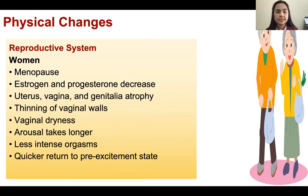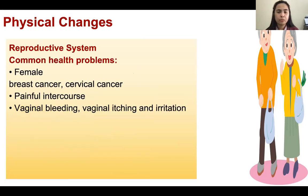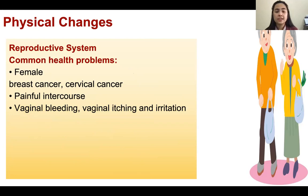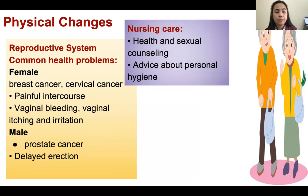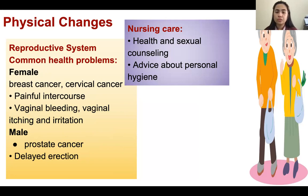For the reproductive system, health problems for females include breast cancer, cervical cancer, painful intercourse, vaginal bleeding, and vaginal itching and irritation. For males, there is prostate cancer and delayed erection. Nursing care includes health and sexual counseling and advice about personal hygiene. This is all about care of mother until adulthood.